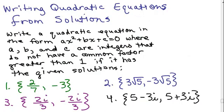I'm going to try to get through all four of these problems in this one video. We want to write a quadratic in the form ax squared plus bx plus c equals 0 where a, b, and c are integers and they do not have a common factor greater than 1. I suggest you put the video on pause and try these on your own. Try to use the most efficient method and then watch how I do it.